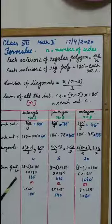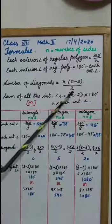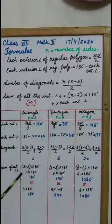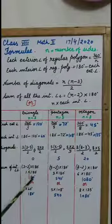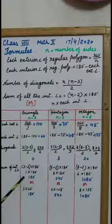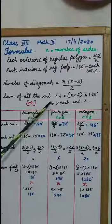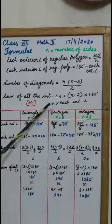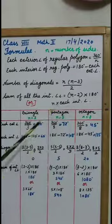Sum of interior angles n minus 2. n minus 2 means 3 minus 2 here, 1 into 180 degrees. So, 180 degrees or if we are using second formula, we can check our answer is correct or not n into each interior angle.